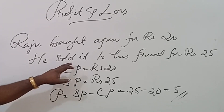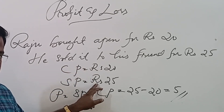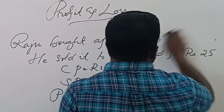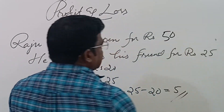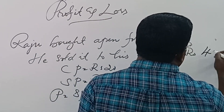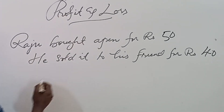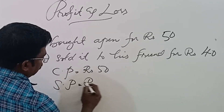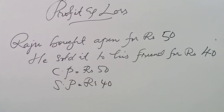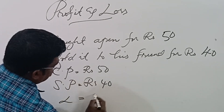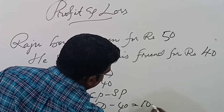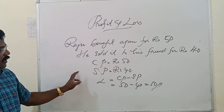In another case, if he bought that pen for Rs.50 and sold it for Rs.40, the cost price is Rs.50 and selling price is Rs.40. Here, cost price is greater, so there is a loss. Loss equals cost price minus selling price, that is 50 minus 40, which equals Rs.10. So he made a loss of Rs.10 in this transaction.